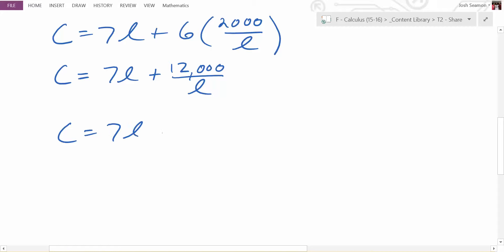12,000 times what? L to the negative 1. L to the negative 1. Yes. Remember that? We turned it into exponent form because we can take derivatives of exponents really easily.